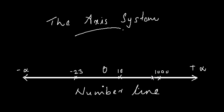The important thing to note in a number line is that on either side of 0 it extends to infinity — from 0 to positive infinity and from 0 to negative infinity. That is a number line, and it is the fundamental line of an axis system. It enables you to define a point anywhere on the line with a single value.